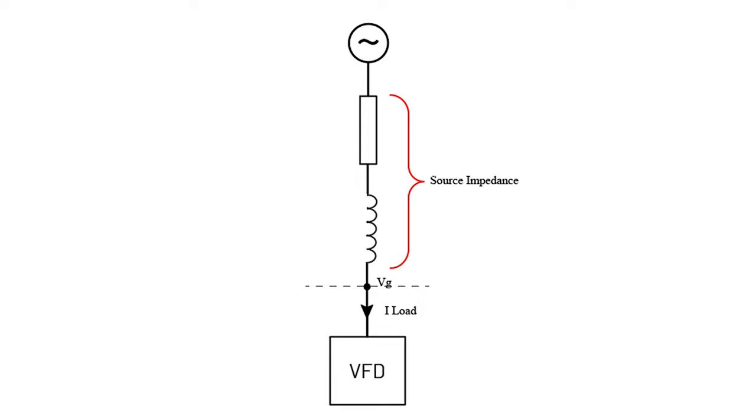Now we can replace the transformer with a Thevenin equivalent — a simple electrical model that will explain how the harmonics are actually affecting the voltage. Consider the second picture: we have an ideal voltage source on the top, an inductor, and a resistance. These two components model the source impedance of the grid, and the load will pull current through those impedances.